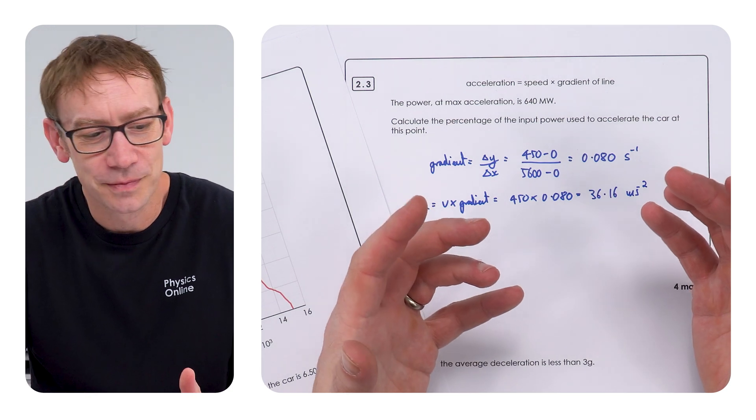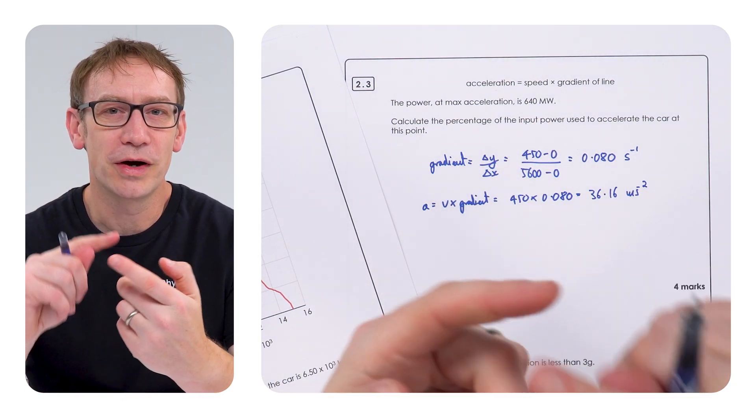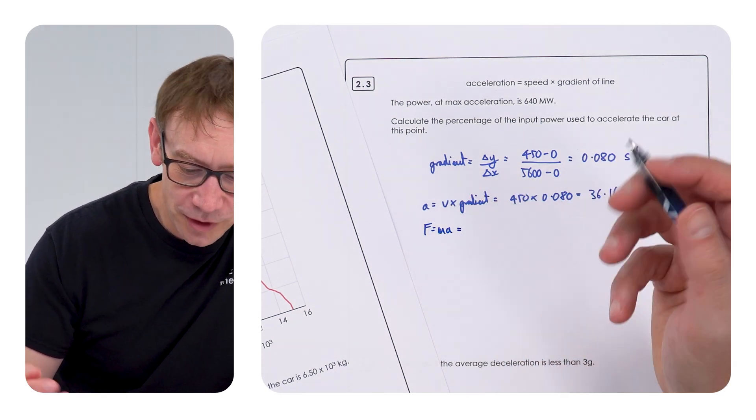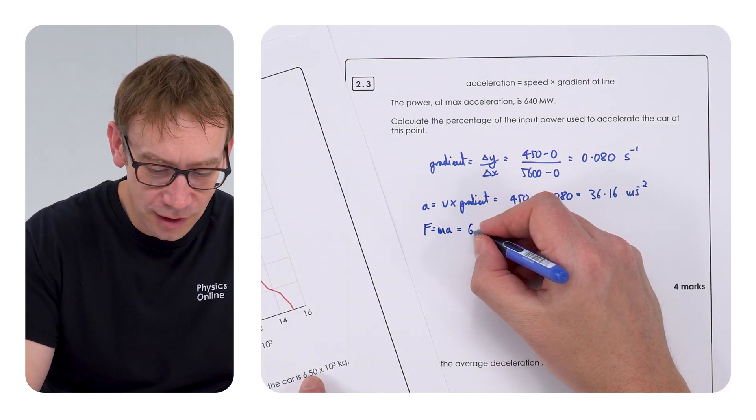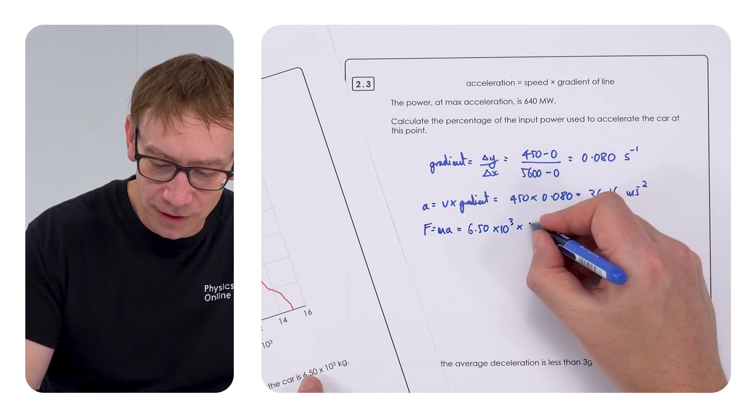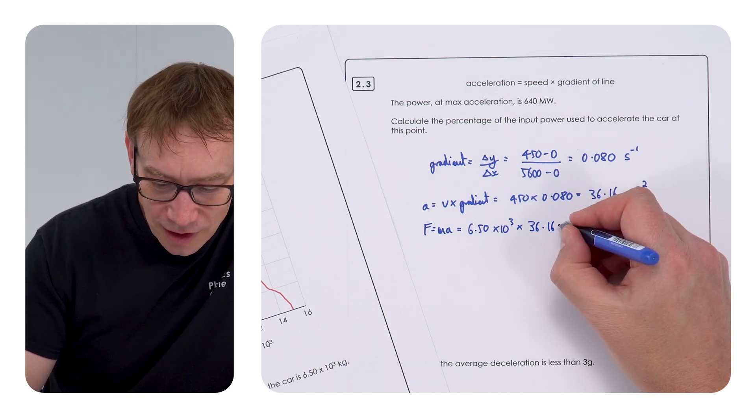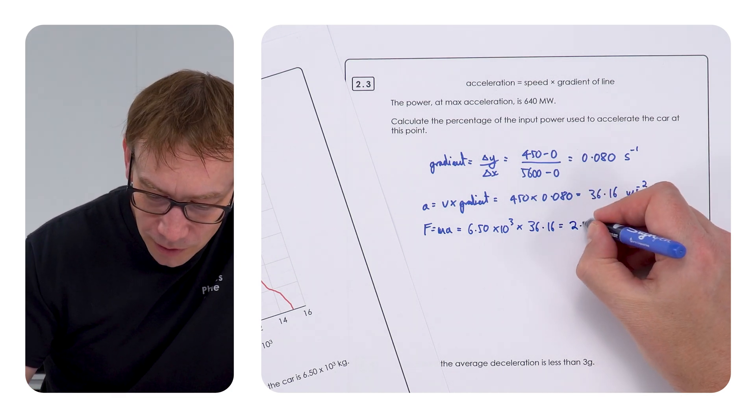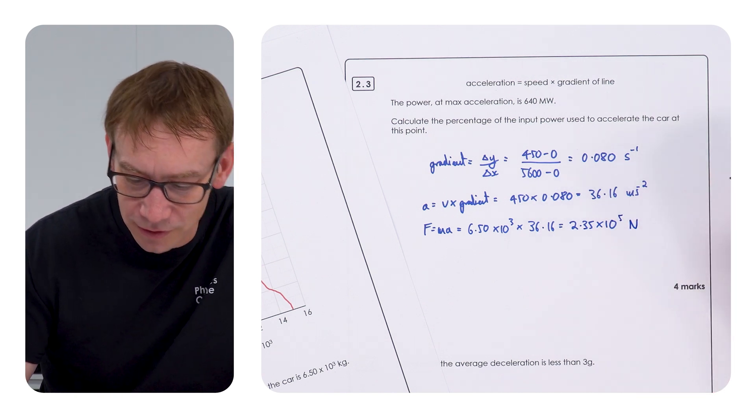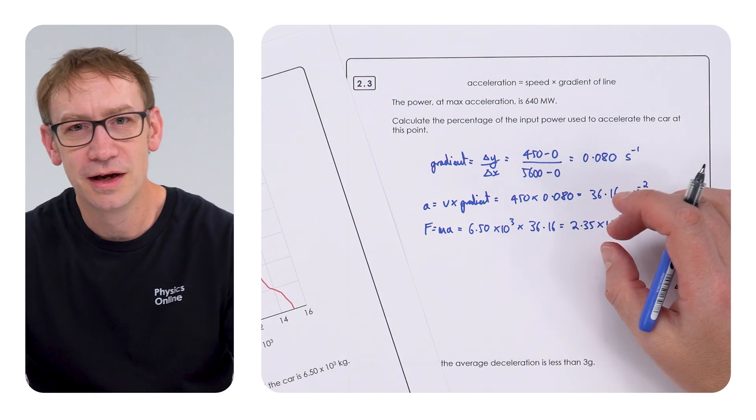But we're trying to find a power. Now, of course, if we know the acceleration of something, we can work out the resultant force actually on it, from Newton's second law that says f equals ma, which is going to be the mass of this car. So, 6.50 times 10 to the 3 times this acceleration up here, 36.16. And this gives the force equal to 2.35 times 10 to the 5 newtons. So now we know the force acting on that car, the resultant force.